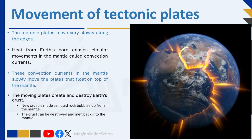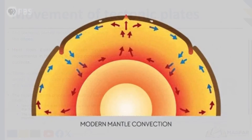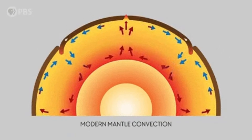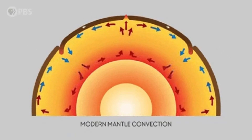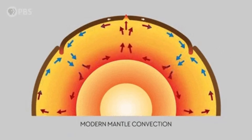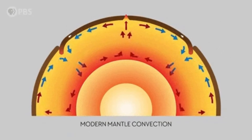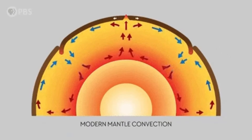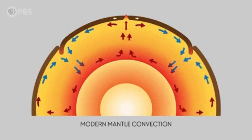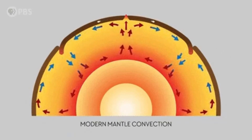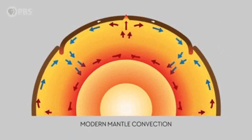Scientists think that heat from Earth's core causes circular movements in the mantle called convection currents. These convection currents in the mantle slowly move the plates that float on top of the mantle. When hot liquid mantle gets close to the surface it cools down. The cooler material begins to sink back into the deeper parts of the mantle where it is heated and rises up again, resulting in a circular movement. This circular movement is a kind of current that moves the plates floating on top of the mantle.